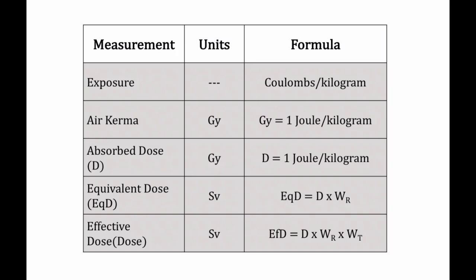Equivalent dose is another measurement we can use to measure the biological damage from radiation in matter. So it's not just the energy in matter, but actually a representation of the biological damage of radiation in matter. Equivalent dose is represented in units of Sievert, and the equivalent dose has a very special formula: it is equal to the absorbed dose D multiplied by a radiation weighting factor, which is something that we look up in a table.